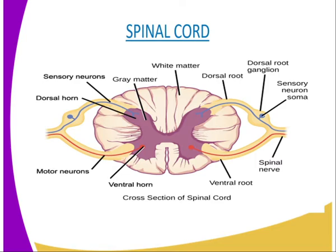The grey matter is H-shaped — that is the letter H of the alphabet — and surrounds a central canal which is fed with cerebrospinal fluid. This grey matter relays information between the sensory and the motor neurons, and consists of cell bodies. This gives it a darker appearance, hence the term grey matter, as you can see from our diagram. Surrounding the grey matter is the white matter, which consists of the axons of the sensory and motor neurons. The myelin sheath of these neurons gives this part its shiny white appearance.